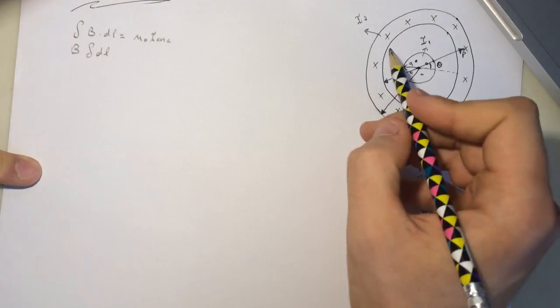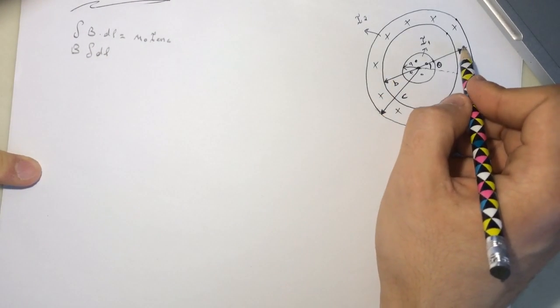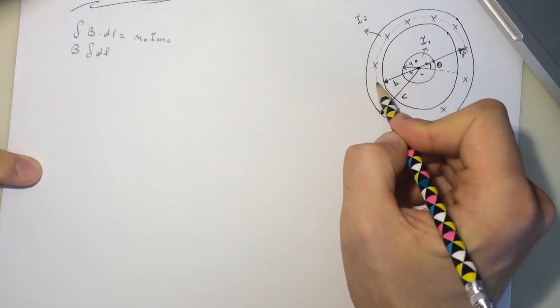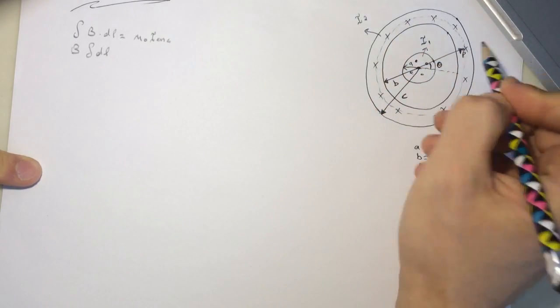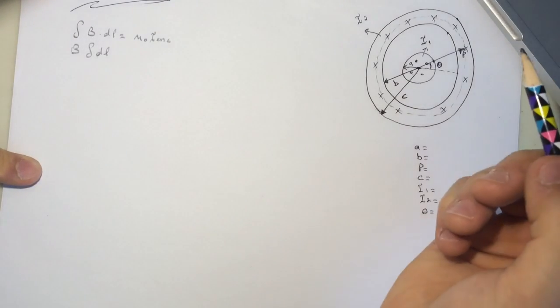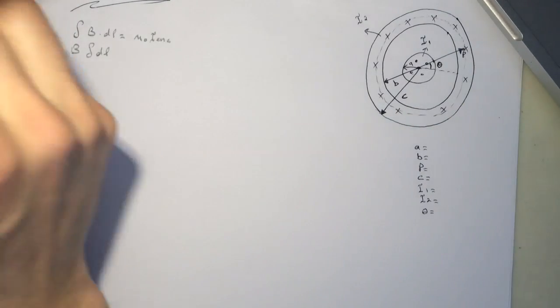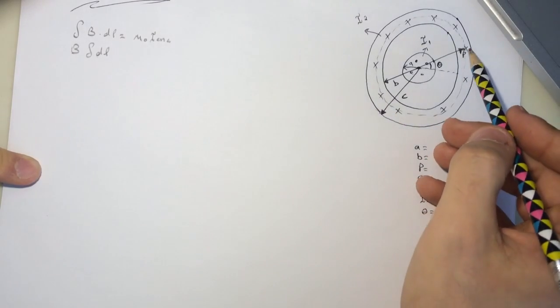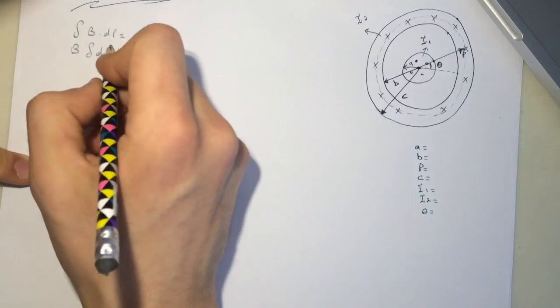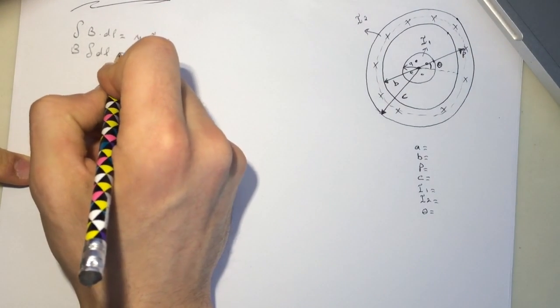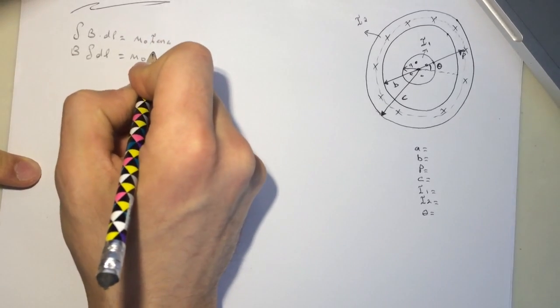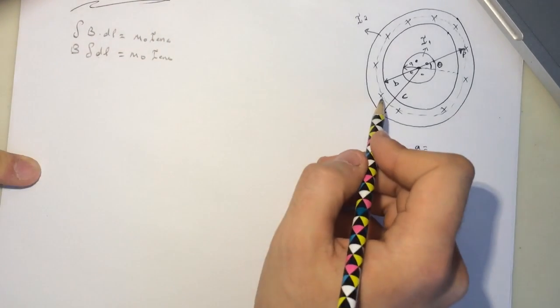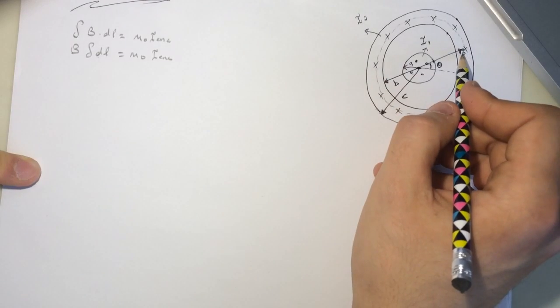The dl here is the surface that we are looking for, so we are looking at the surface enclose. So this is the surface we are looking for. It's not surface actually, it's like where we want to find the current inside. So mu zero i enclosed.